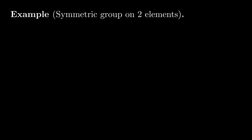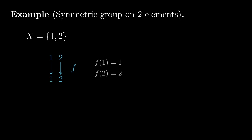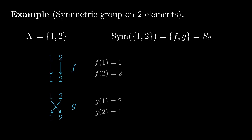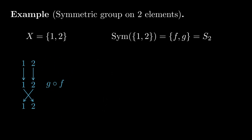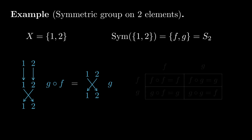Here's an example. If x is a set with two elements, then Sym(x) consists of the identity map on x, which we'll call f, and the bijection which swaps the two elements of x, which we'll call g. This is a permutation group, and group theorists like to call it S2. The S is short for symmetric group, and the 2 refers to the fact that x has two elements. Given any two bijections in S2, we can compose them to get another bijection. This structure can be captured in a multiplication table.